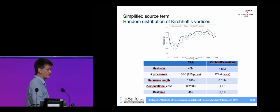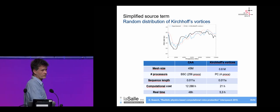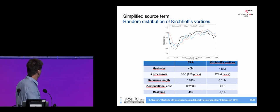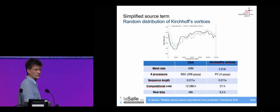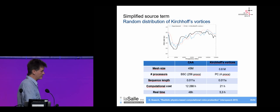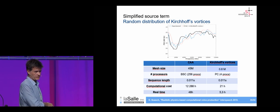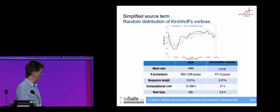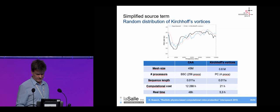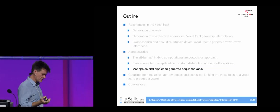In terms of computational cost, the standard CAA requires about 46 million elements and 256 processors at a supercomputer center, while the Kirchhoff vortex approach requires only 800,000 elements and can run on a lab computer with just four processors. Computation time goes from roughly 12,000 CPU hours (about two days on a supercomputer) to about 21 CPU hours, reducible by a factor of four with a 16-processor workstation.